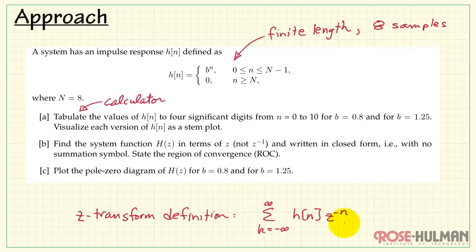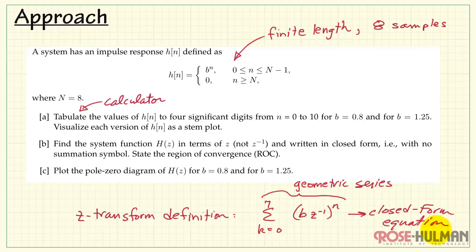That looks like this. The reason that it's easier is because with a finite length signal running from 0 to 7 in this case, that would be n minus 1, and with H of n replaced with B to the n, we see that with just a little bit of algebra we can get this into the form of a geometric series.